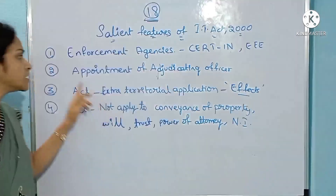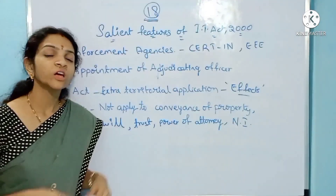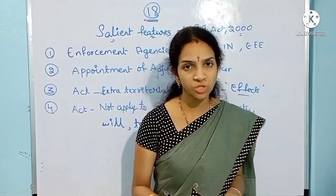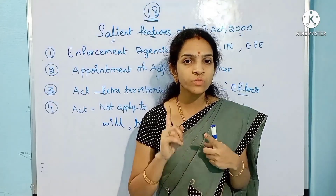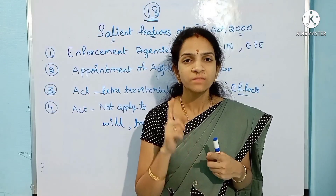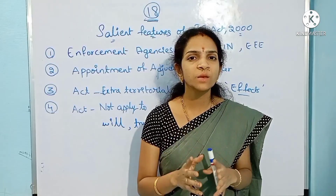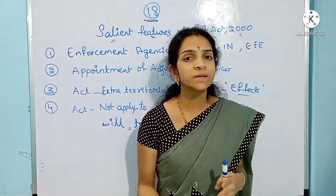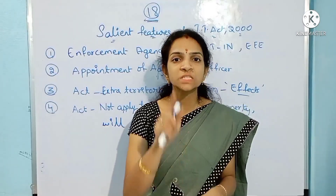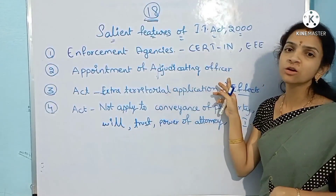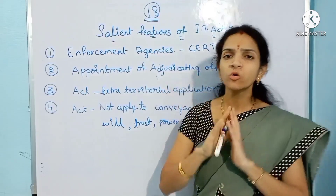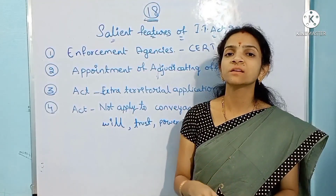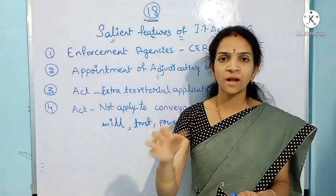Coming to the next point is the requirement of an adjudicating officer. In the earlier video I discussed cyber contraventions — these are things which attract civil liability, meaning penalties will be attracted for cyber contraventions. So according to the act, the authority who decides such cyber contraventions is the adjudicating officer. He is the person who will be deciding cases with regard to cyber contraventions, that is, those which attract civil liability or penalties.